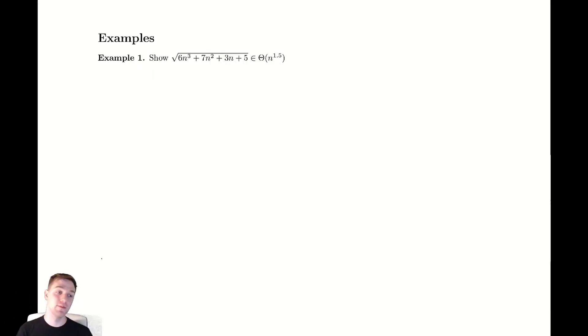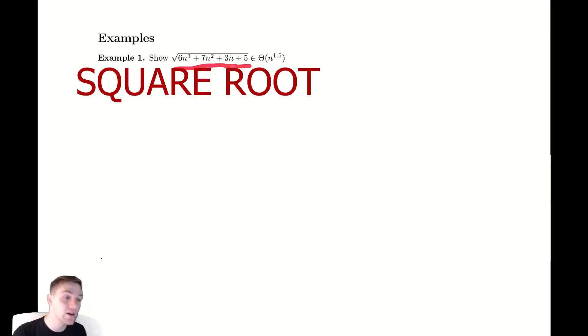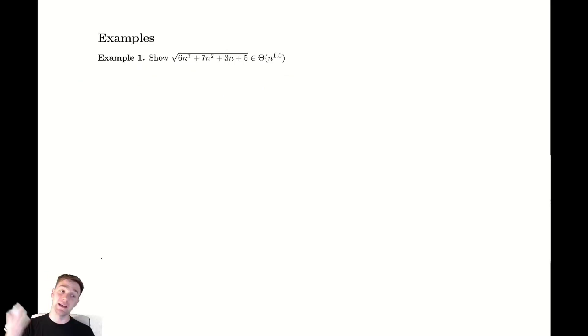Hello everyone, in this video we're going to be showing that some horrible mess of a function, that's this really ugly looking inequality here, is in big theta of some much nicer function n to the 1.5. Why might we have come up with n to the 1.5? Well, let's quickly glance at this. We look for the most important term.